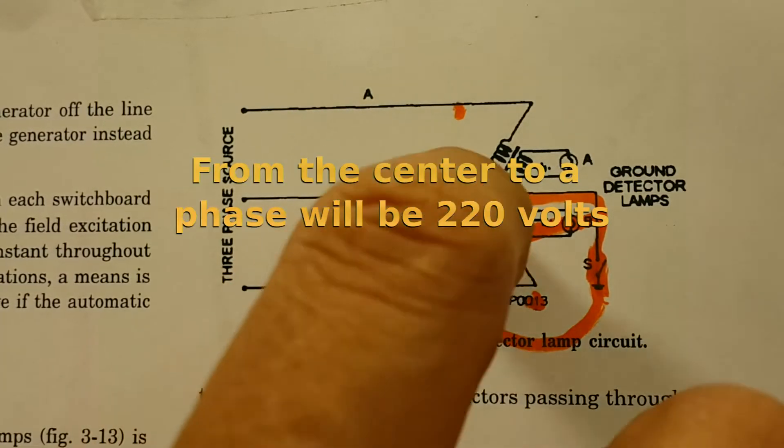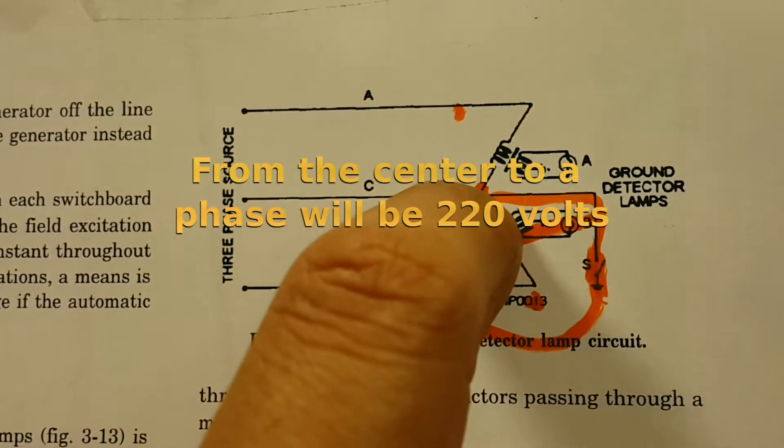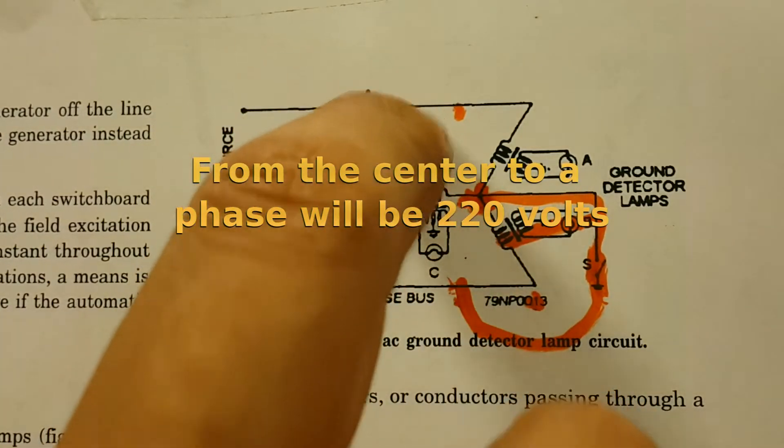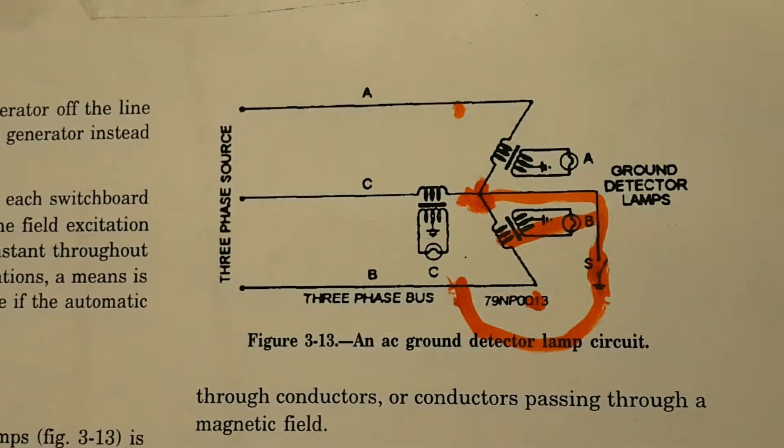When the system is working like it's supposed to, that there is no ground, the difference of potential between one point and one phase will only be 220 volts.